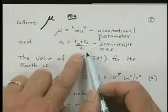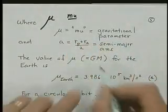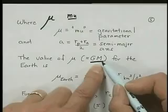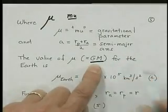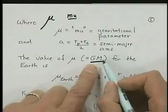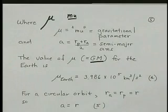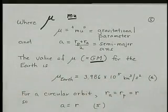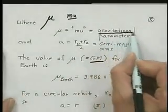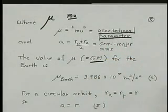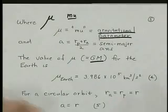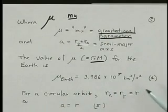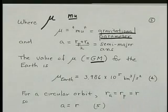As I mentioned, a is rp plus ra over 2. Mu is the gravitational parameter. It's g times m. That means Newton's universal gravitational constant g times the mass of the Earth. These two numbers always appear together, and in fact, we really don't know exactly the mass of the Earth. But we know the value of g times m to a much greater level of accuracy, and so it's pretty standard in orbital mechanics to just use the mu by itself. And we call it the gravitational parameter, and there's a value for all the planets, the sun, and the moons in the solar system. For the Earth, mu, which is this product gm, is 3.986 times 10 to the fifth kilometers cubed per second squared. Some odd sounding units, but we'll see why we have those units when we do calculations.